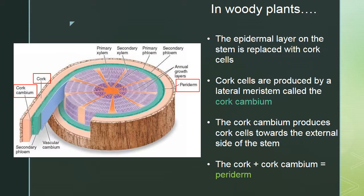What about the epidermis of woody plants? The epidermal layer on the stem of a woody plant tends to be replaced with cork cells once the cork cambium starts producing cork toward the outside — the epidermal layers just get sloughed off. The thin cork cambium layer produces cork to the outside, and together they are called the periderm.